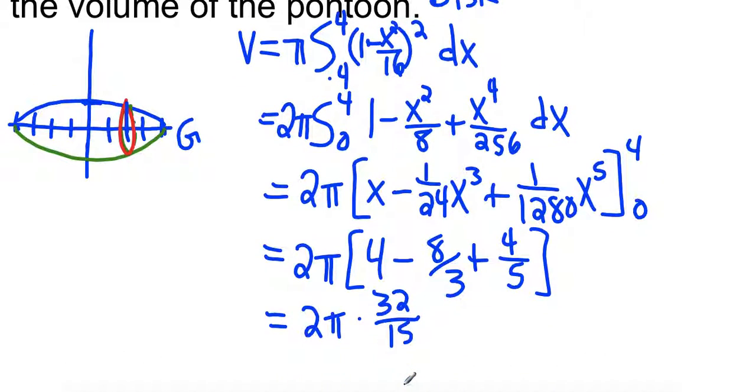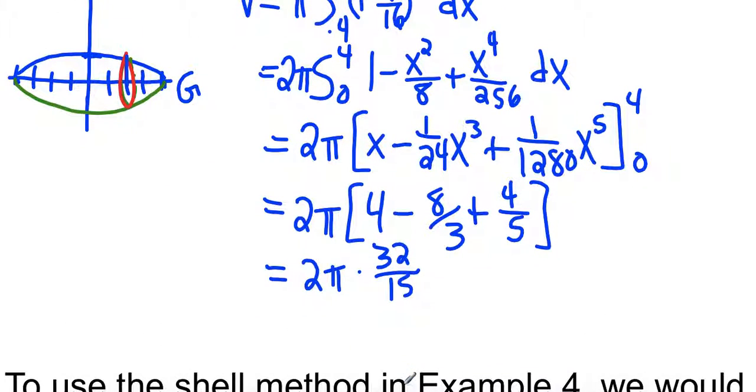The answer is going to be 64 pi over 15 as the volume of this. I think the book might do this one in cubic feet since it's like an actual boat. So 64 pi divided by 15 is 13.4 cubic feet for each of those pontoons.